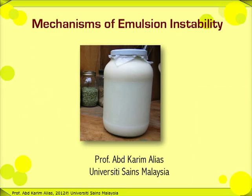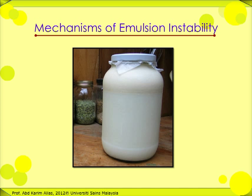Hello everybody. In this presentation, let's look at some mechanisms that can cause an emulsion to become unstable — that is, to separate into two layers. As you can see in this picture, milk, which is a simple emulsion, has separated into two layers.